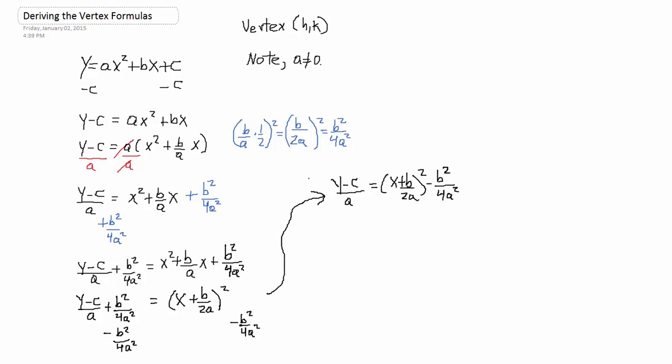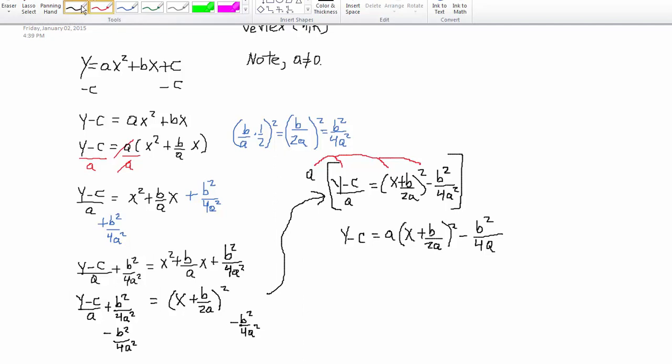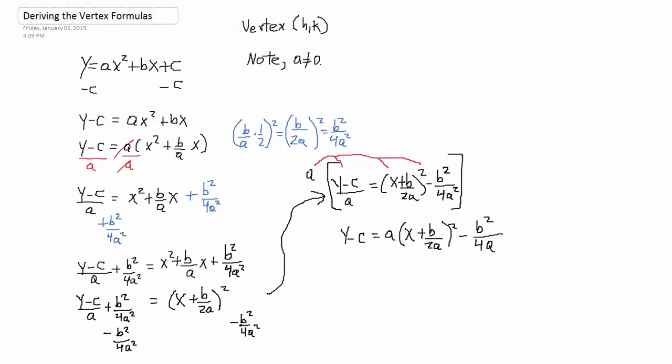Then I can multiply everything times A. So, times A throughout. So, I have Y minus C is equal to A, parentheses, X plus B over 2A. All of that squared minus B squared all over 4A. Because that A basically got distributed here, here, and here. So, then that cancelled out. That last A squared.